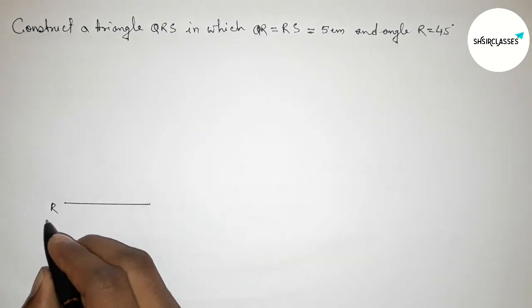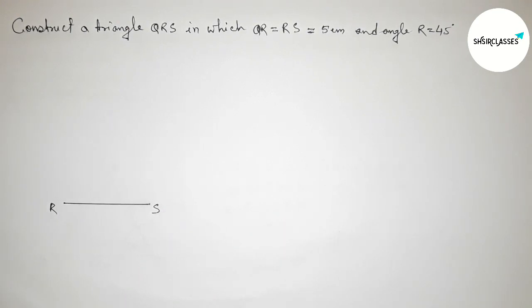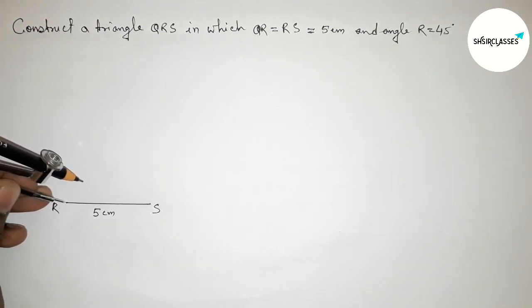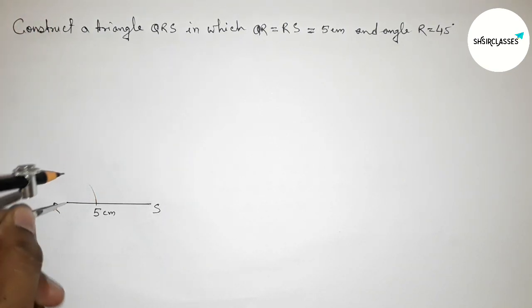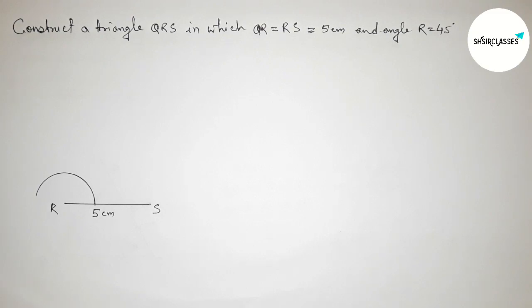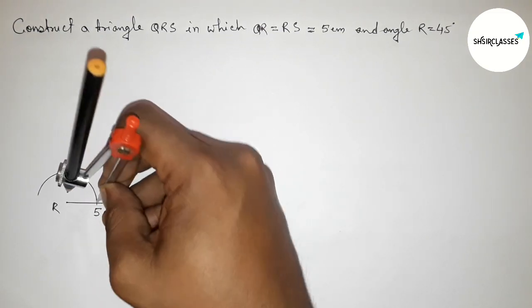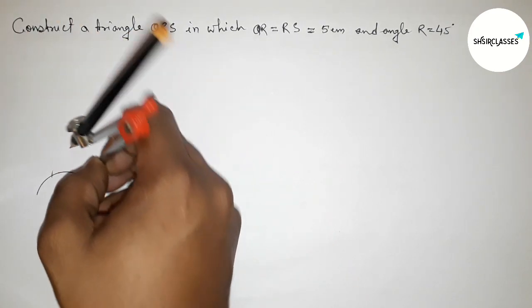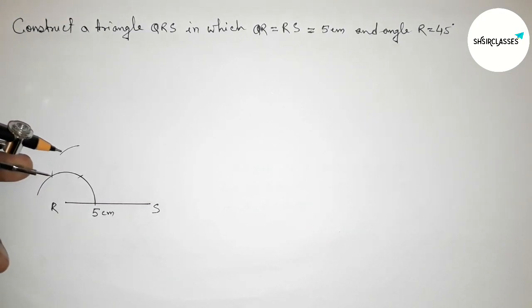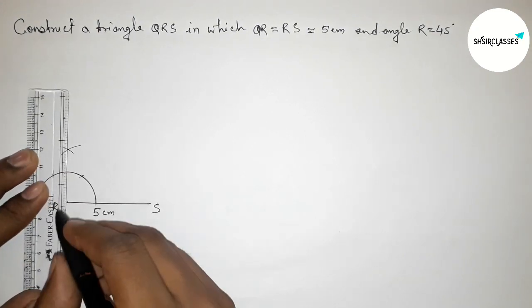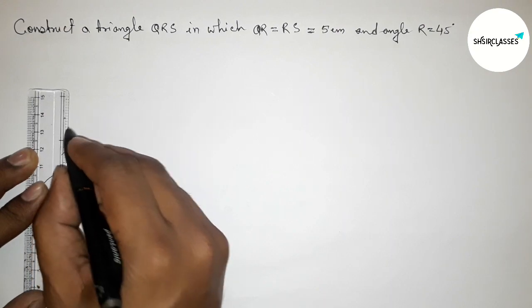Taking points R and S, with RS equals 5 centimeters. Now drawing a 45 degree angle at point R. Putting the compass on point R and taking any length, drawing an arc. Again putting the compass and taking the same length, cutting here. Putting the compass again and cutting to get a 90 degree angle, then joining this line to get 90 degrees.